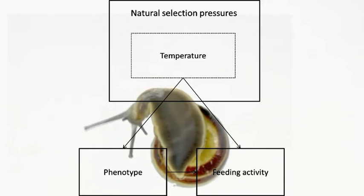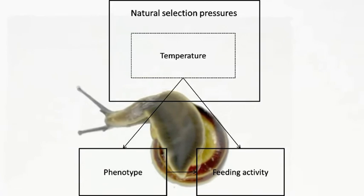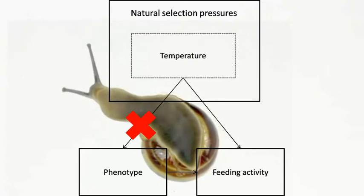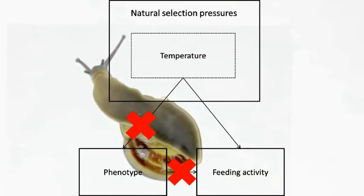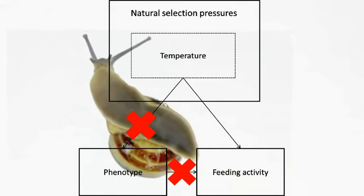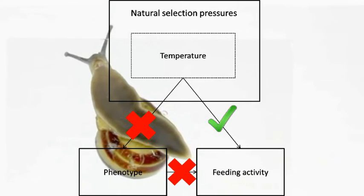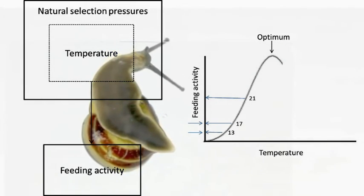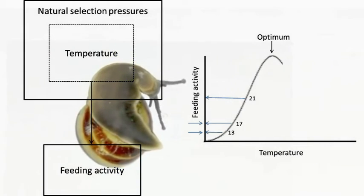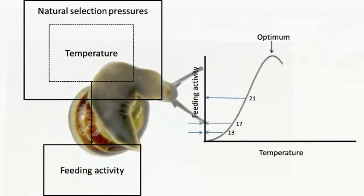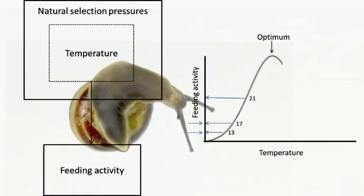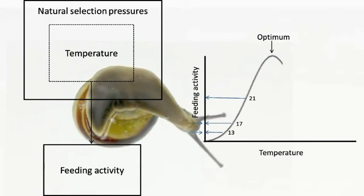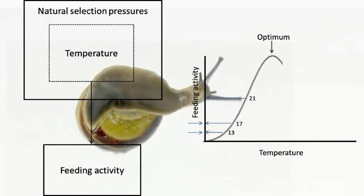We did not find evidence that phenotype influences feeding preferences under different temperature regimes. This suggests that temperature and phenotype are not dependent on one another, and phenotype is independent from feeding activity. Temperature did have an effect on feeding activity. At 21 degrees Celsius, the feeding rate was significantly higher than in snails subjected to the 17 and 13 degrees Celsius regimes. All morphs have a higher feeding rate at the warmest temperature, indicating that feeding activity increases with warmer temperatures. However, there will be an optimal temperature for maximum feeding activity, and beyond this optimum, feeding activity will decrease again.